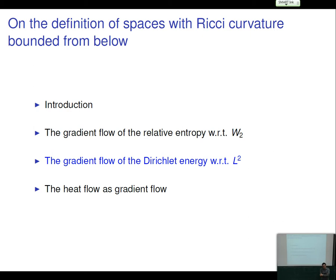The hard task in attempting such a definition is to prove that CD(K,∞) plus W^{1,2} Hilbert is a stable notion. A first step was done yesterday by showing that the gradient flow of the relative entropy with respect to the Wasserstein distance exists, is unique, and is a stable notion. The class of metric measure spaces CD such that the gradient flow of the relative entropy linearly depends on the initial measure is already a stable class.